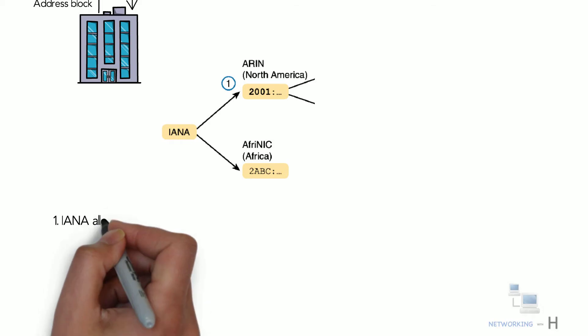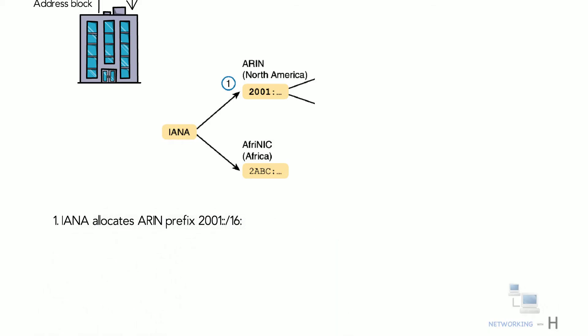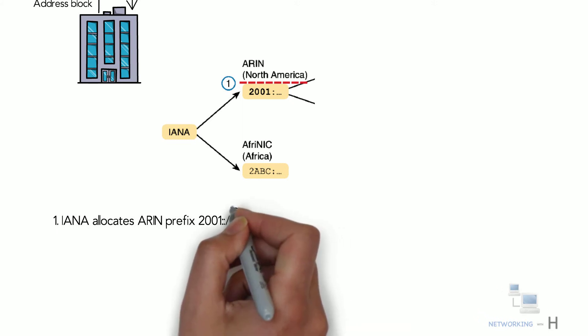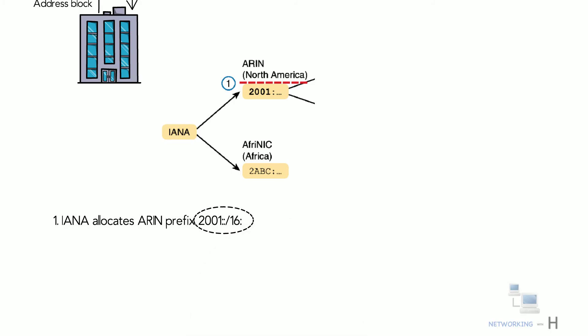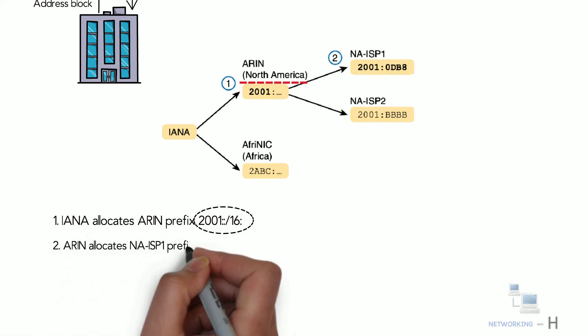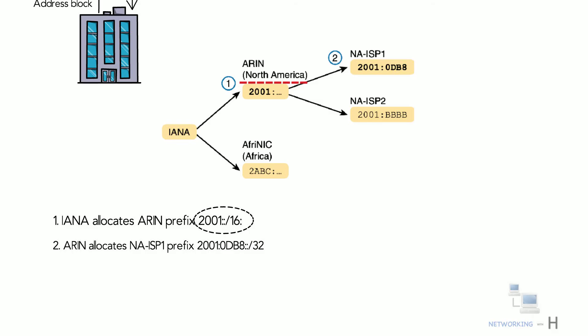Here is the address assignment process. Step 1: IANA allocates ARIN the prefix 2001::/16. ARIN, the RIR for North America, asks IANA for a large block of addresses, and IANA assigns all addresses beginning with 2001::/16. Step 2: ARIN allocates North American ISP1 the prefix 2001:0db8::/32. ARIN takes a subset of its 2001::/16 prefix — specifically all addresses beginning with 32 bits (8 hex digits) of 2001:0db8 — and allocates it to the ISP.